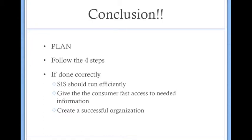In conclusion, if an SIS is flawed, it can directly affect the organization. There needs to be a plan. Not just a plan for now, but also a plan that includes further than six months from now. Follow the four steps, and if done correctly, an organization's SIS should run smoothly. Give consumers fast access to needed information and create a successful organization.